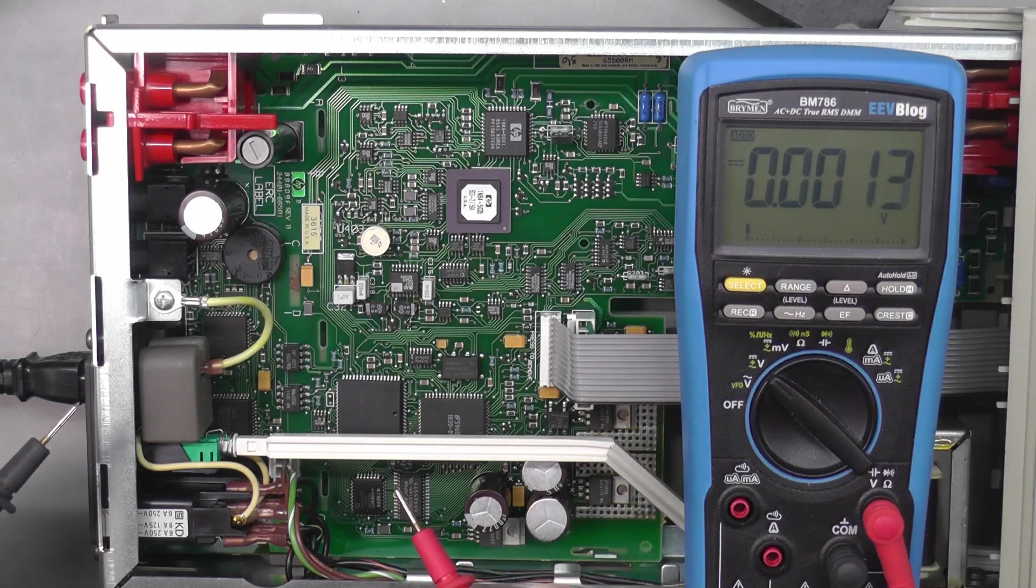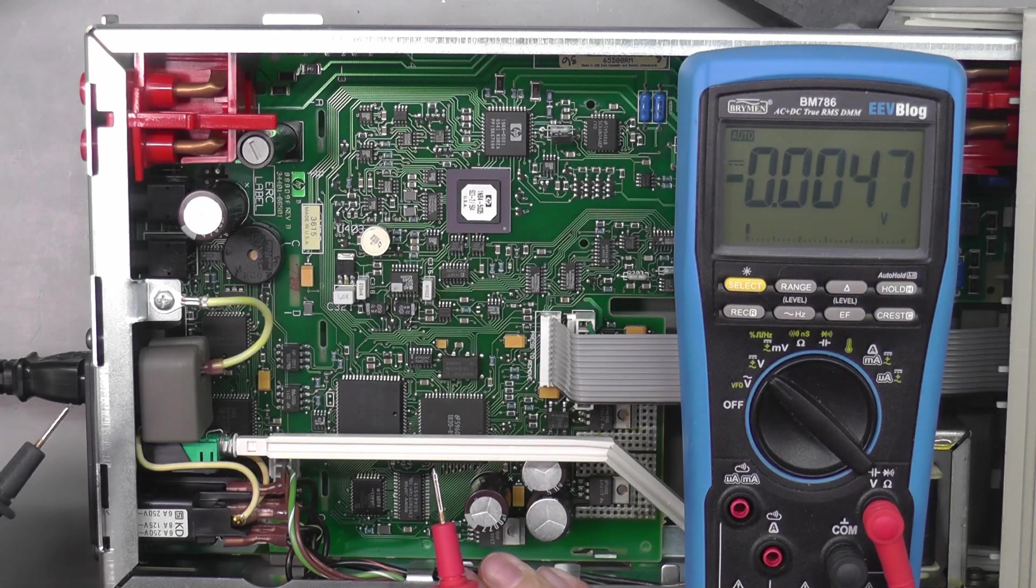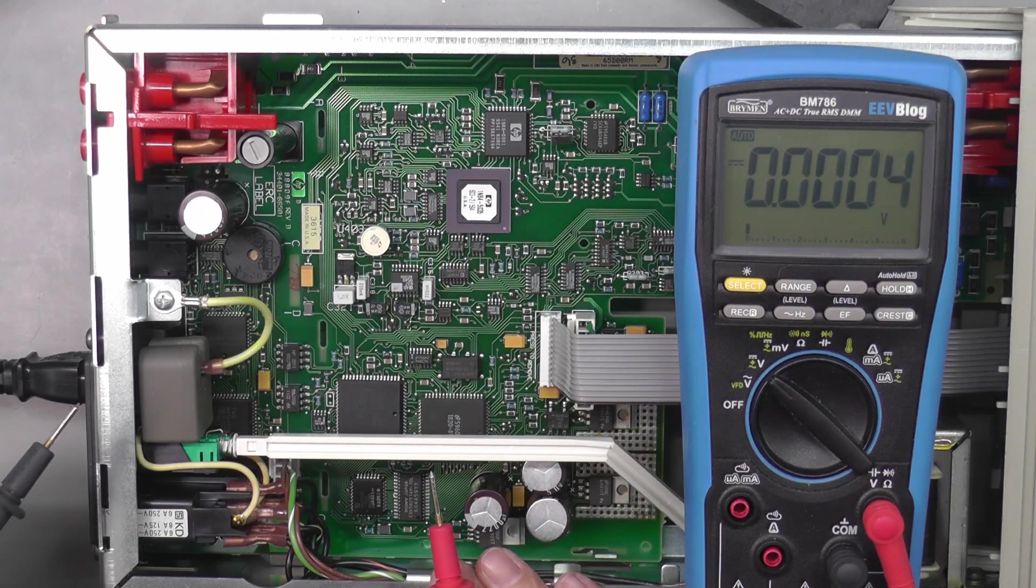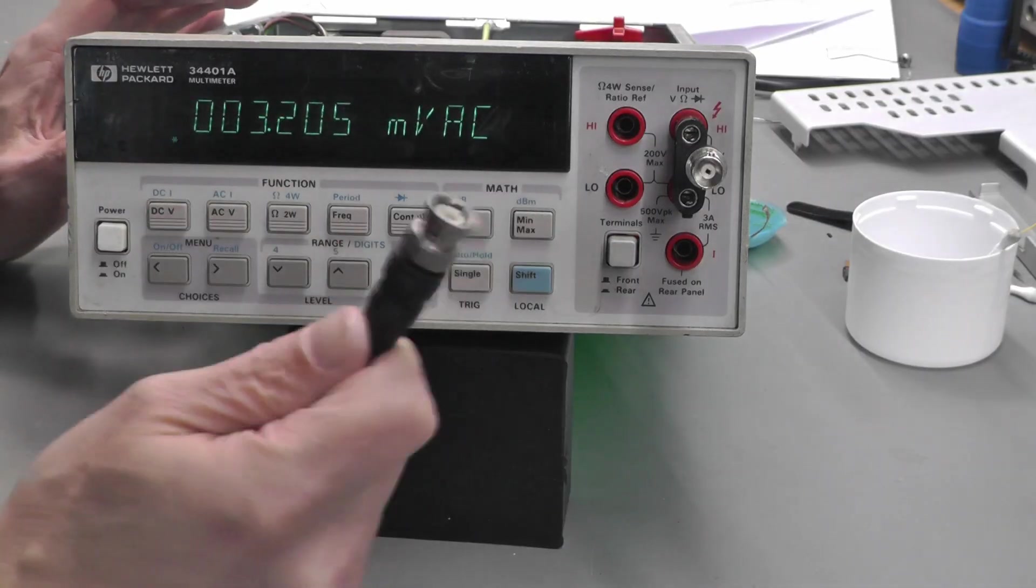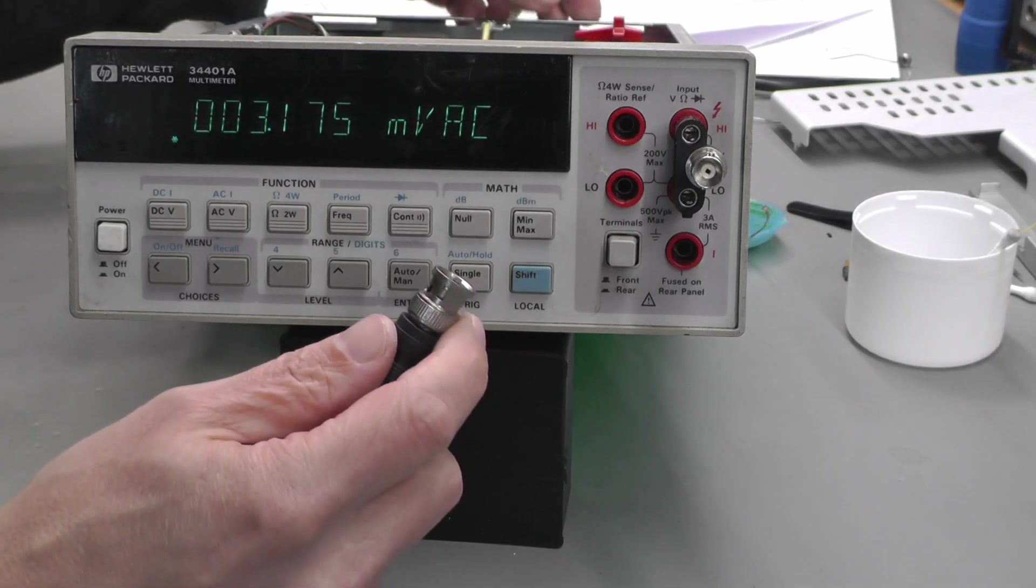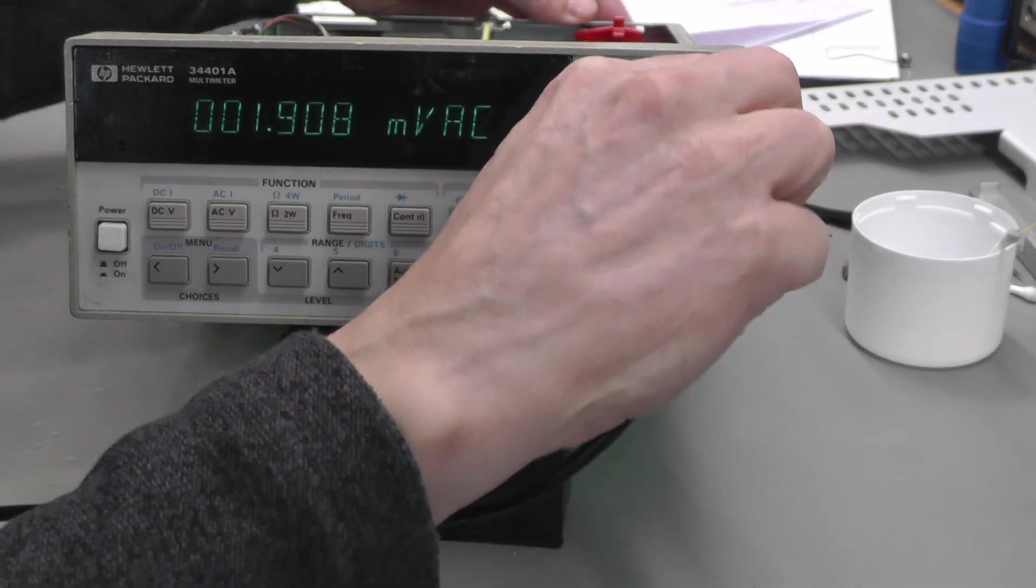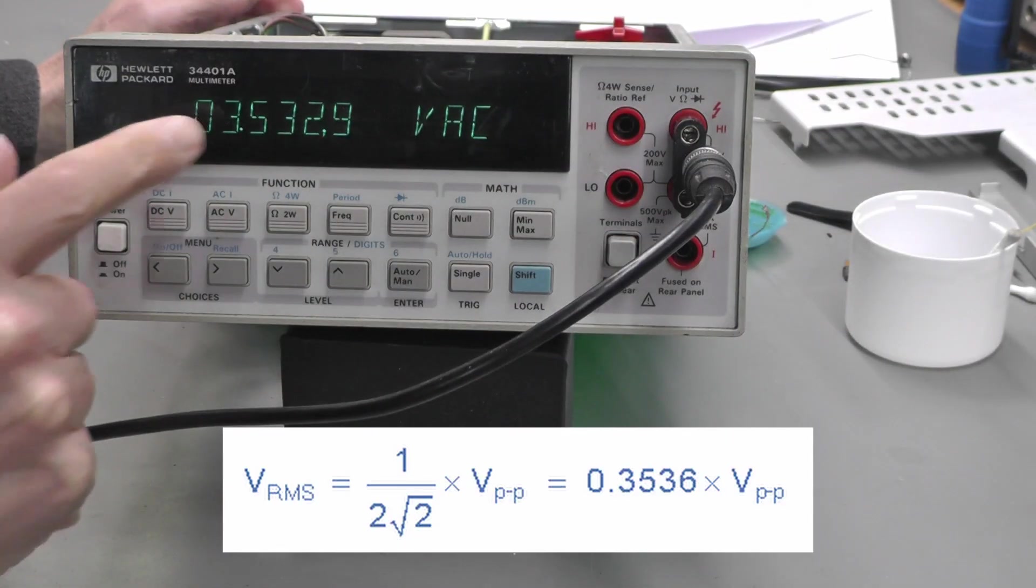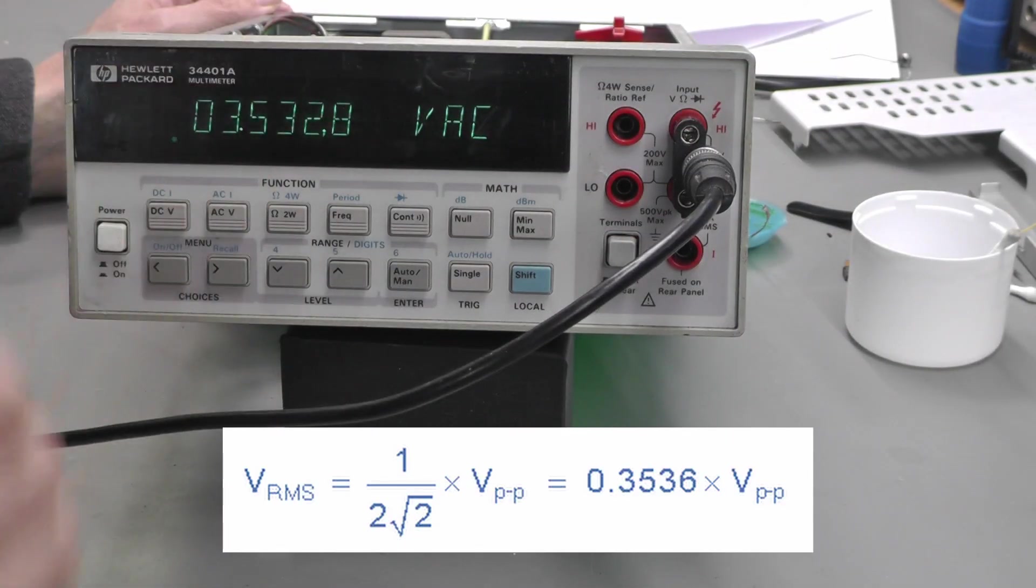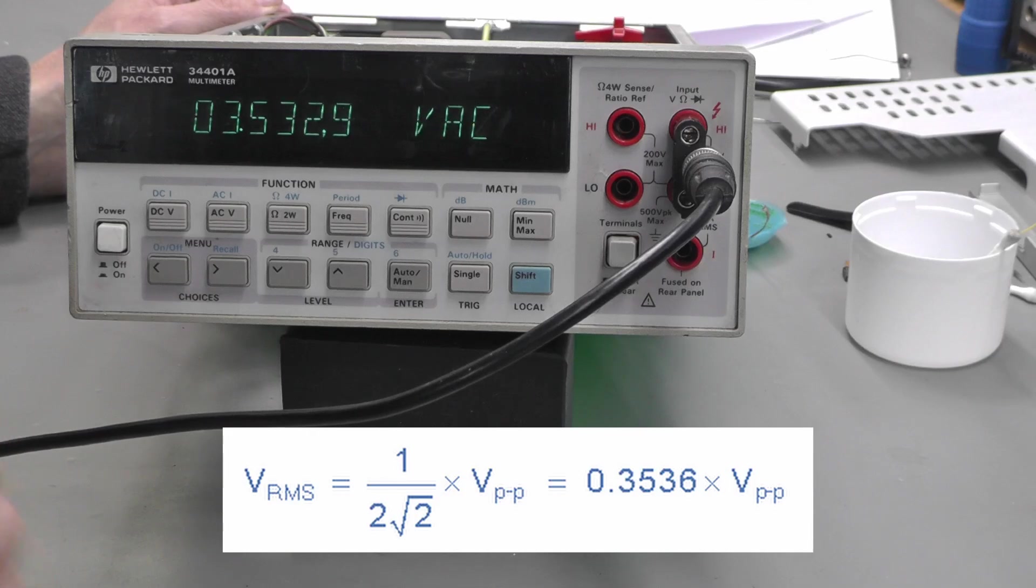Has that fixed the error that I'm getting on the front panel? Let's give it a test. The 3245 is still running, so it should still be getting 10 volts peak-to-peak AC. Let me plug it in and see what I get now. Yes, 3.53 volts AC RMS, perfect.